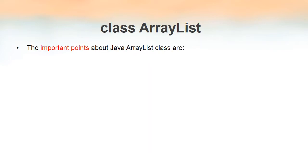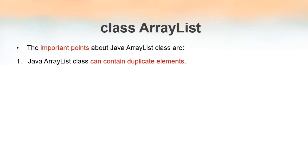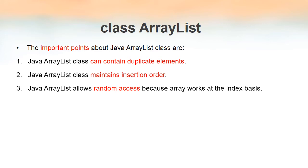Some important points to keep in mind when dealing with ArrayList: first, ArrayList can contain duplicate elements. Second, it maintains insertion order — the order in which elements are inserted is maintained internally. Third, random access is possible because ArrayList permits accessing elements based on index, just like an array, and the index always starts from zero.